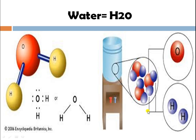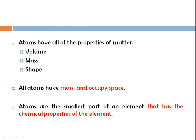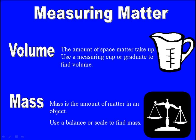A single molecule consists of one oxygen and two hydrogen atoms, and has all the properties of matter: volume, mass, and shape. All atoms have a mass and occupy space. Atoms are the smallest part of an element that retains the chemical properties of that element. We can measure matter in a few ways, that is in terms of volume and mass.